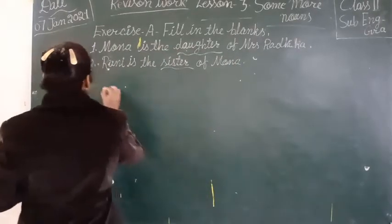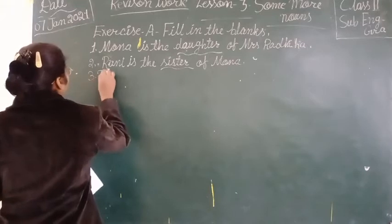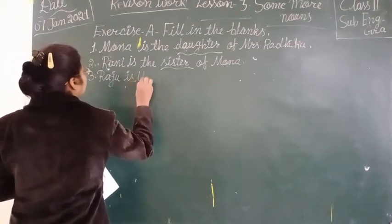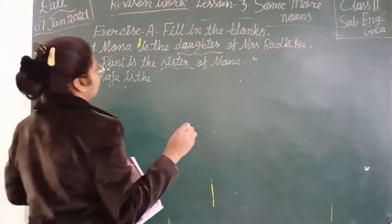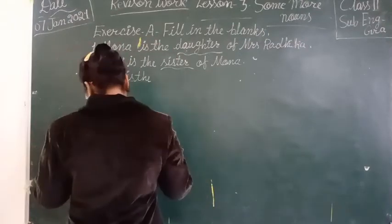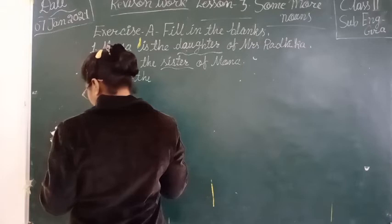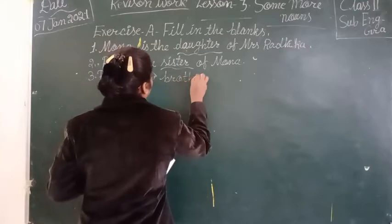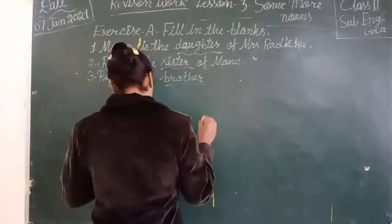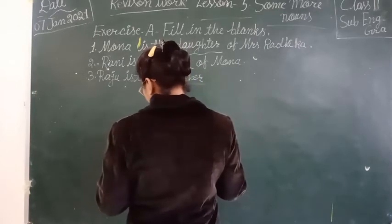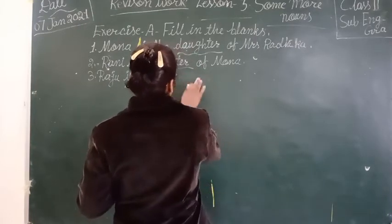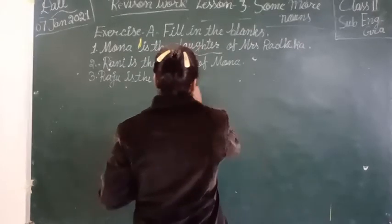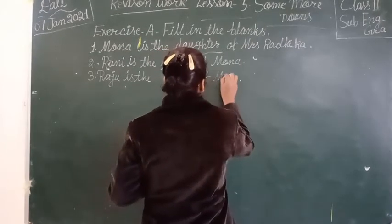Three. Raju is the blank of Mr. Raman. Jo Raju hai woh Mr. Raman ke kya lagte hain? Raju is the son of Mr. Raman. Brother and son — toh yahan son of Mr. Raman.